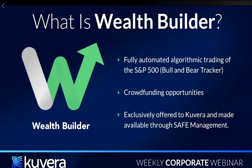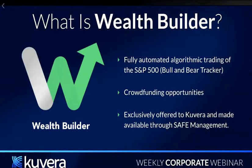The S&P basically tracks the 500 most important companies across a variety of industries, and it's really the best indicator of how the U.S. equities market is trending and how the economy is looking. You hear all the time — the Dow was up, the S&P was down. Markowski has created technology and an algorithm called the Bull and Bear Tracker to capitalize on the movements of the market — specifically that volatility of up days and down days.